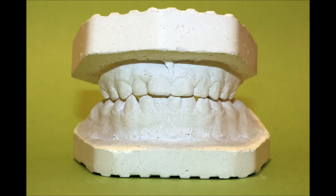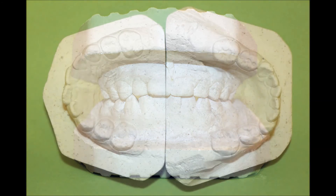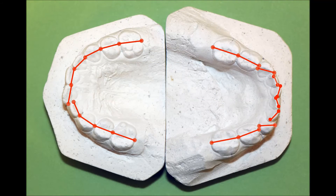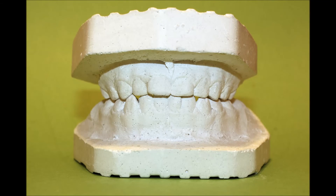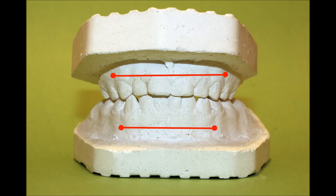Width of the apical base. Dolga Polova determined a relation between the total width of the mesiodistal diameters of 10 primary teeth and the width of the apical base. Measuring points are located between the root apices of primary canines and the first primary molars, in the deepening of the alveolar process. The width of the apical base in primary dentition amounts to 55.7% of the total width of 10 primary teeth on the upper jaw and 50% on the lower jaw.